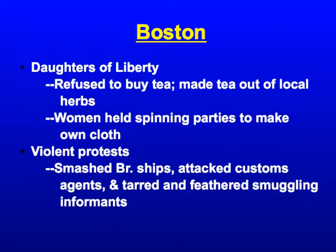In Boston, we also see the creation of the Daughters of Liberty, who refused to buy tea and instead used local herbs to make their own — a civil form of boycotting. They also held spinning parties where they would make their own cloth, since colonists were supposed to buy cloth from Britain. Making their own cloth hurt British merchants and factories and reduced reliance on their goods — a boycott to hurt their economy. Eventually there were also some violent protests: smashed British ships, attacked customs agents, and tarred and feathered smuggling informants.